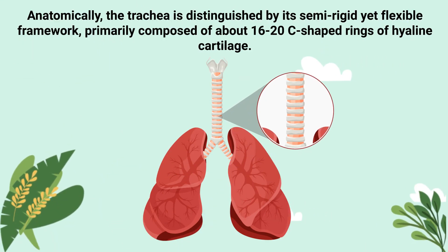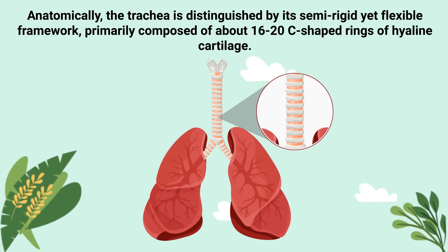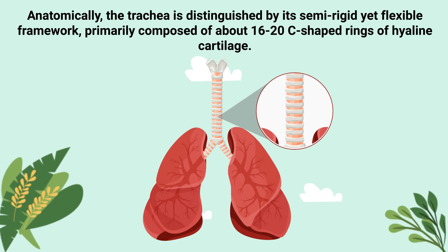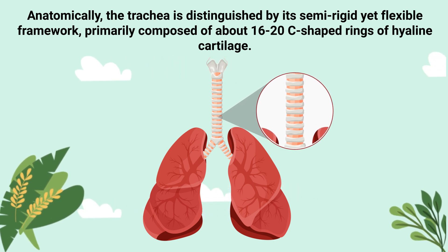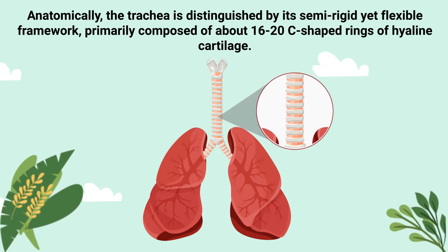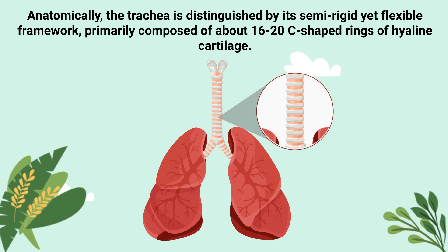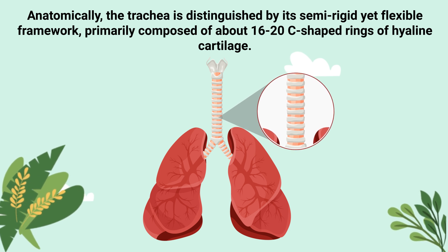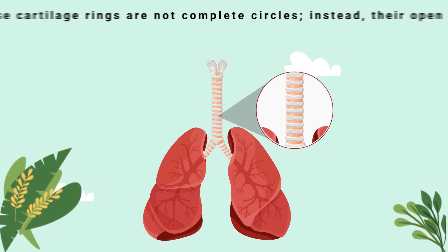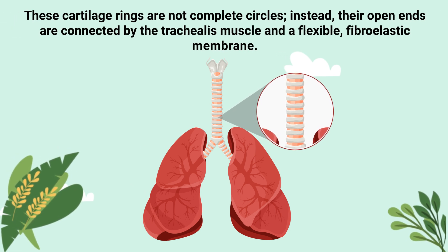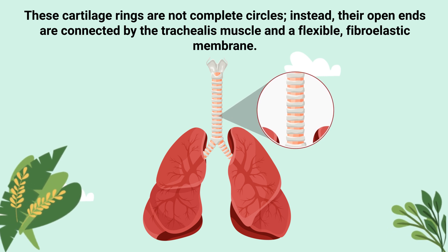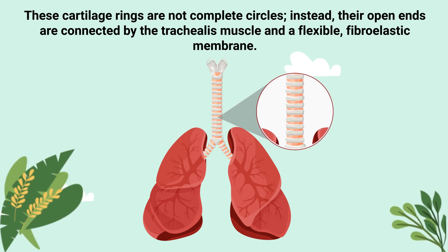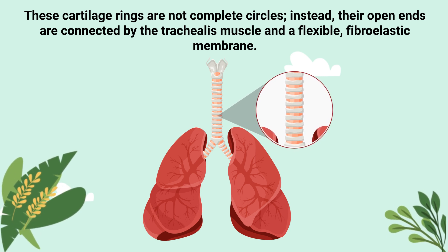Anatomically, the trachea is distinguished by its semi-rigid yet flexible framework, primarily composed of about 16 to 20 C-shaped rings of hyaline cartilage. These cartilage rings are not complete circles. Instead, their open ends are connected by the trachealis muscle and a flexible fibroelastic membrane.